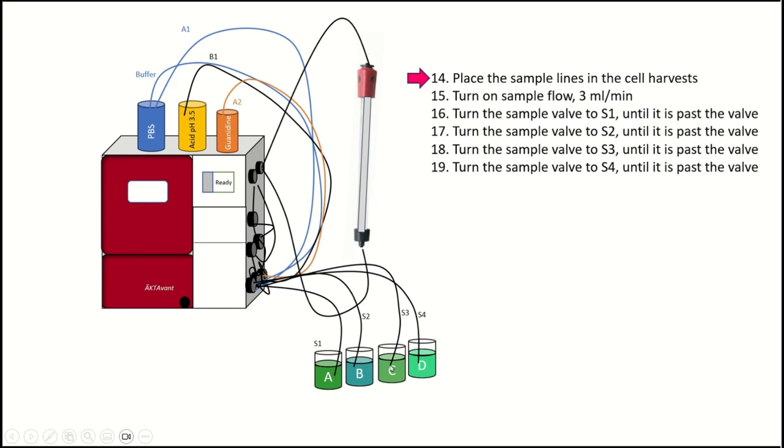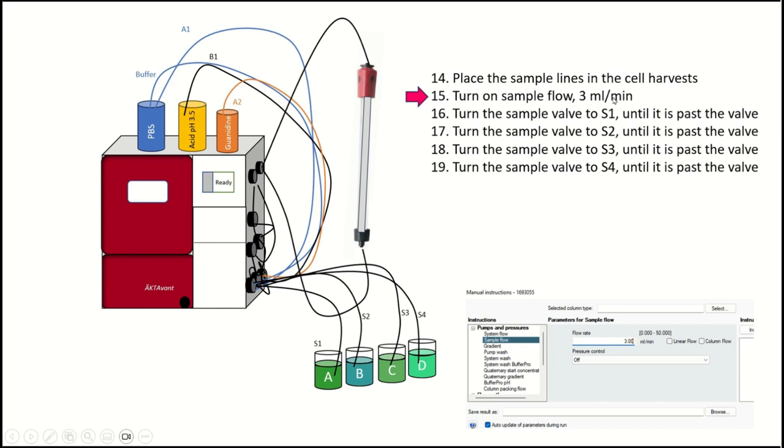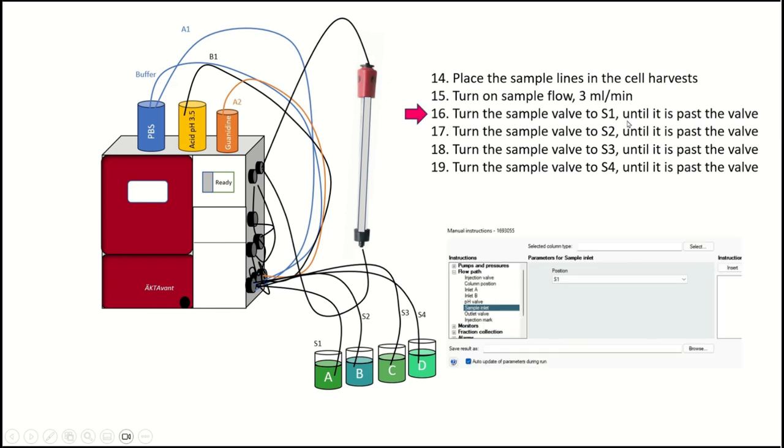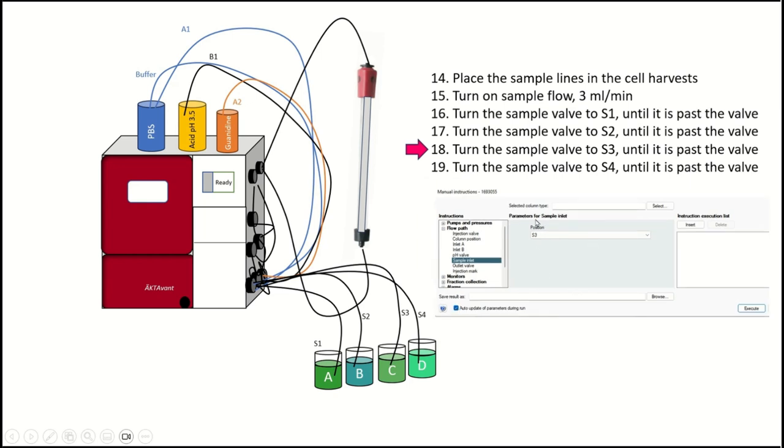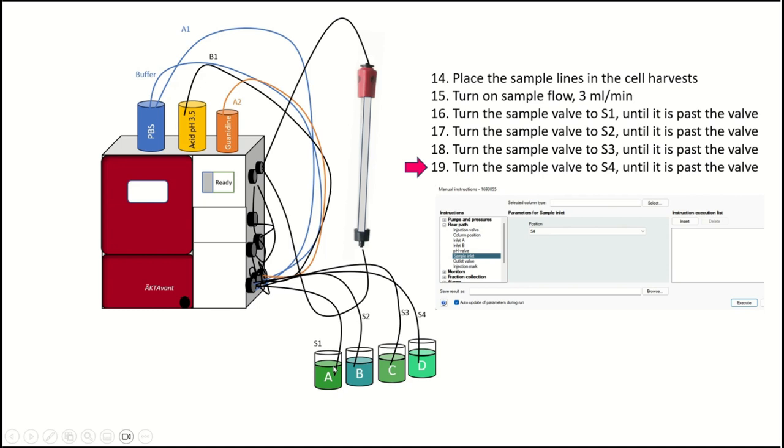Okay. So then when we do that, going back here, just real fast, we're going to not only just place the sample lines in the cell harvest, we're going to make sure they're going all the way to the bottom. So this graphic's kind of hard to get things like perfectly lined up. But we want to make sure all those tubes are all the way in the bottom. Then we're going to turn on the sample flow for three mils a minute. And once we've done that, we're going to turn the sample valve to position one of the sample pump. Then we're going to wait until the bubble, like if there's any air bubble or just the sample is going to go past the sample valve, right? And we're going to do the same thing for sample two, same three thing for sample three and sample four.